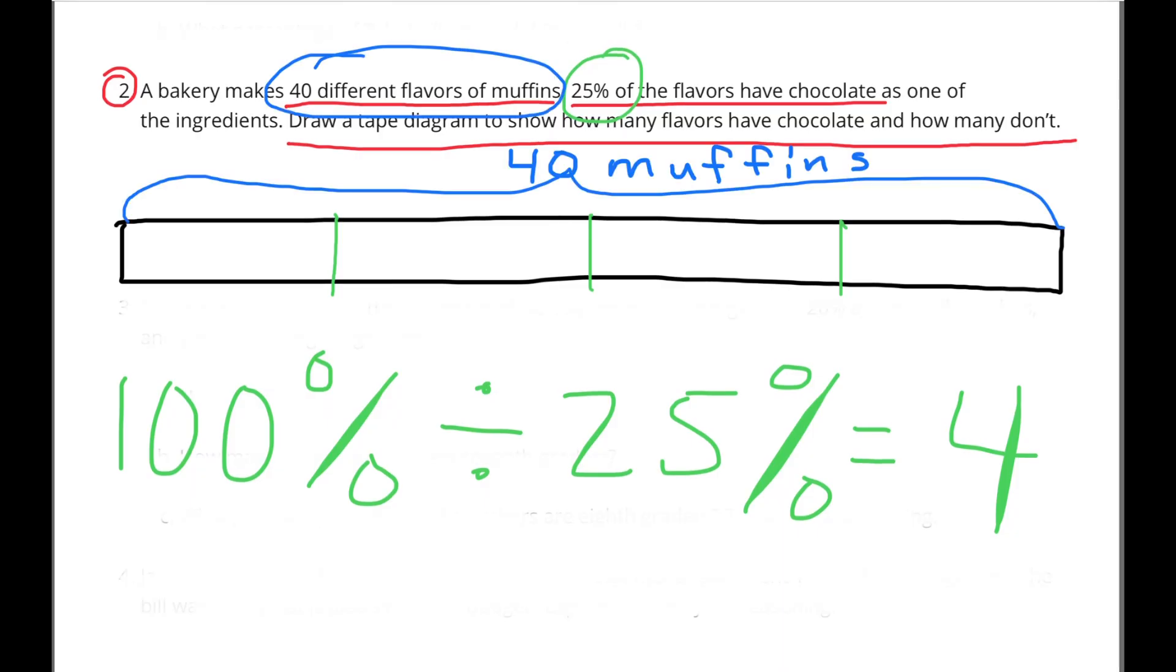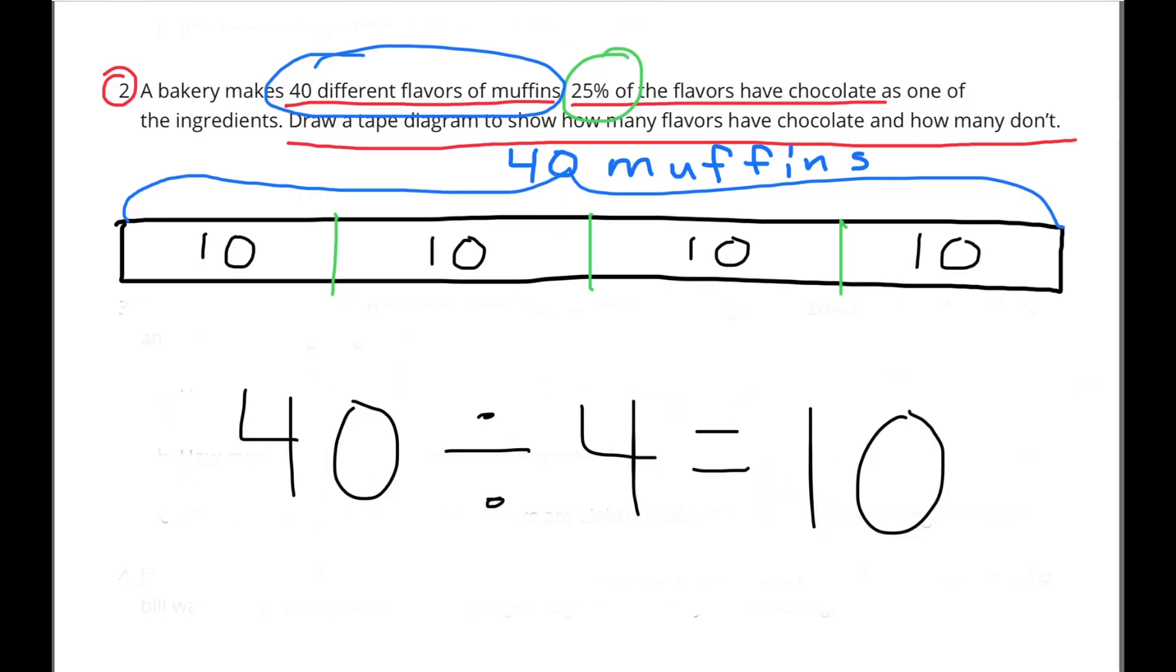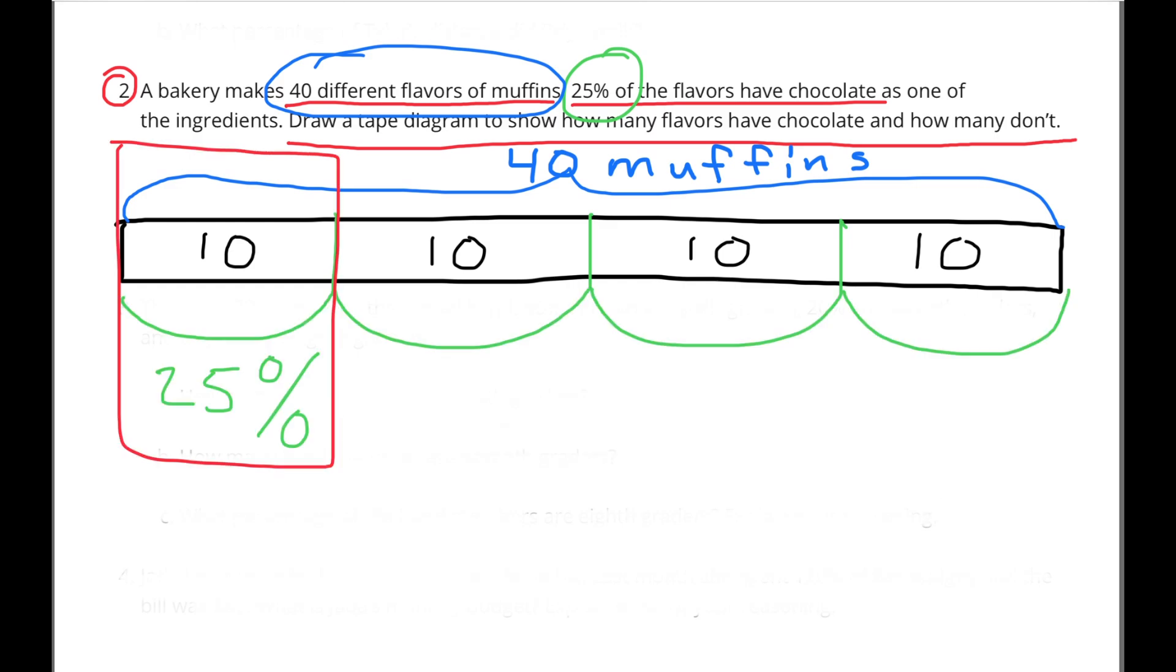Remember, 100% of this entire tape diagram represents a total of 40 muffins. 40 muffins divided by 4 sections equals 10. So there's 10 muffins in each section. The red box on the left represents the 10 flavors of muffins that have chocolate in their ingredients, and all 3 of the sections to the right represent the flavors of muffins that don't have chocolate in their ingredients.